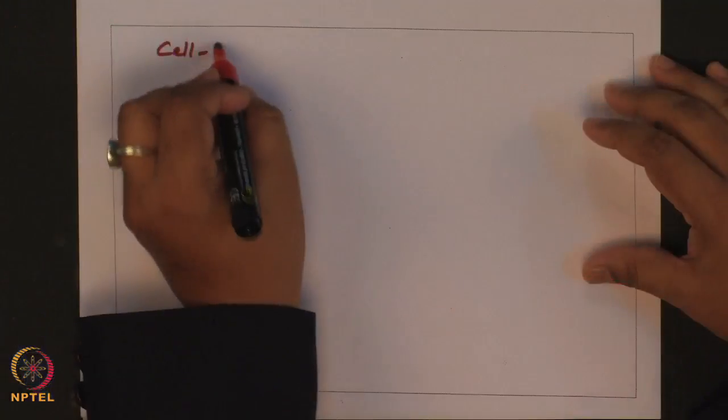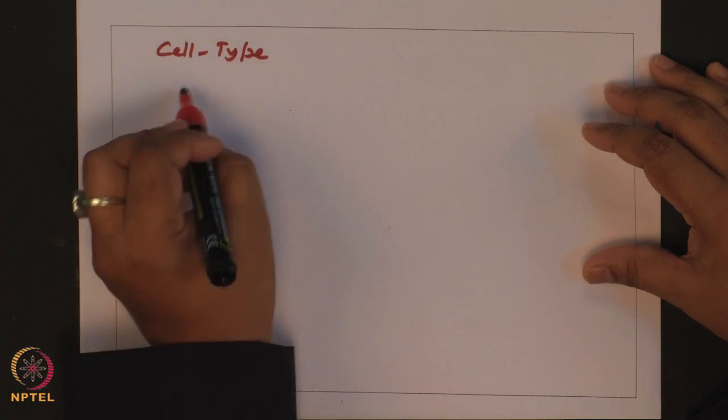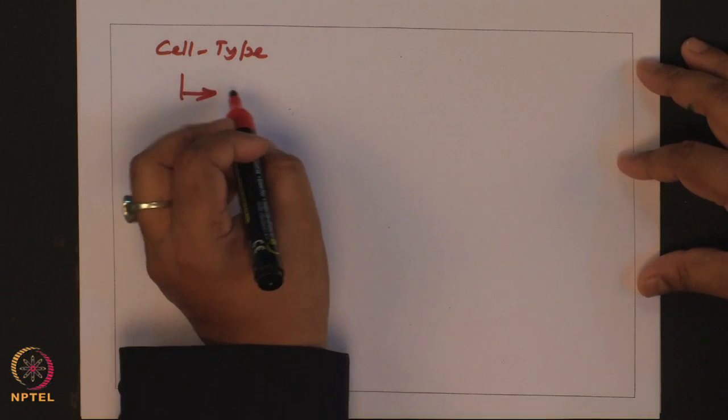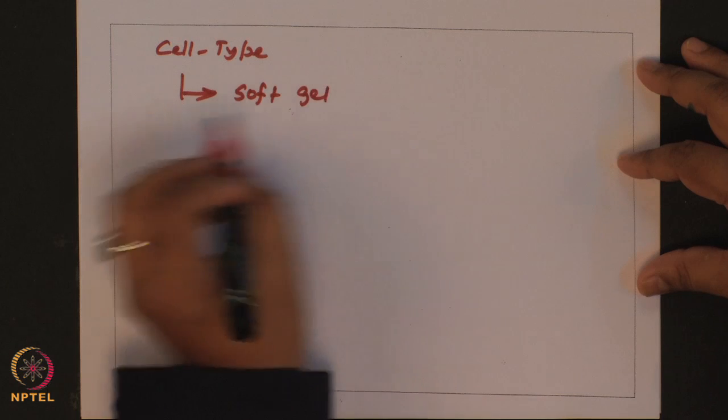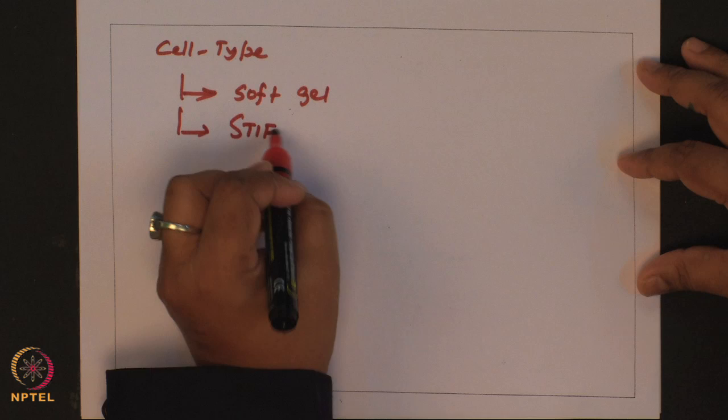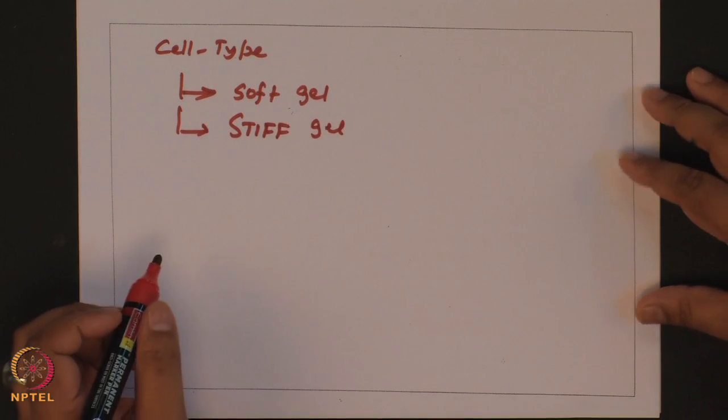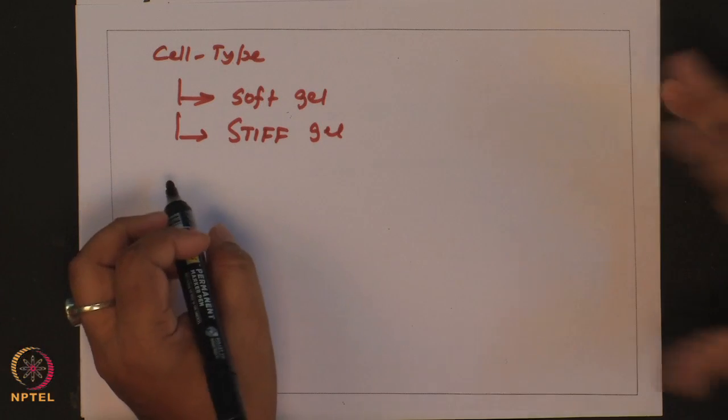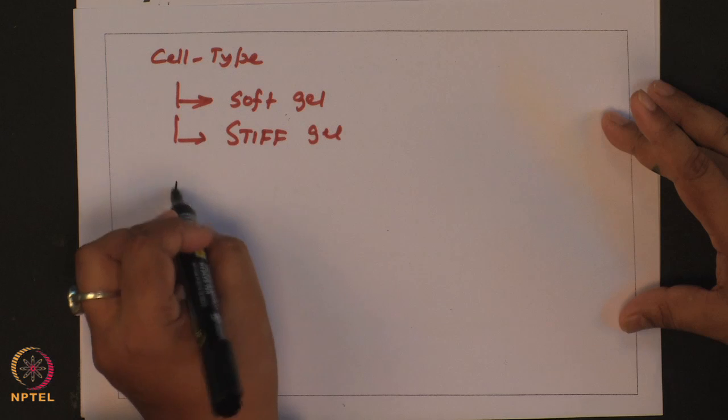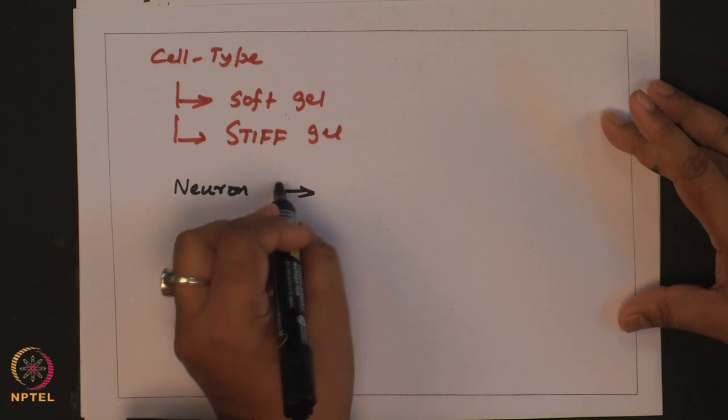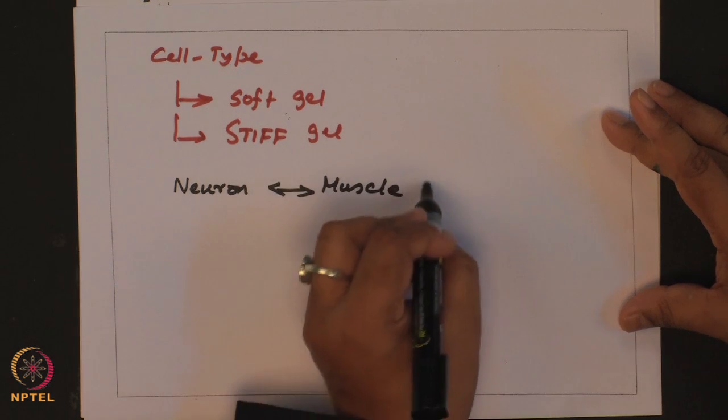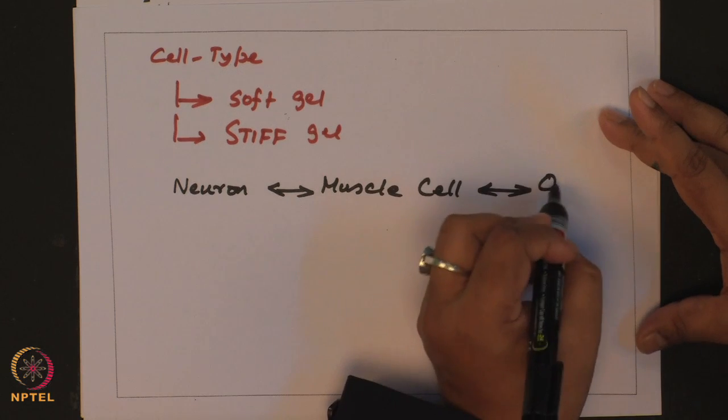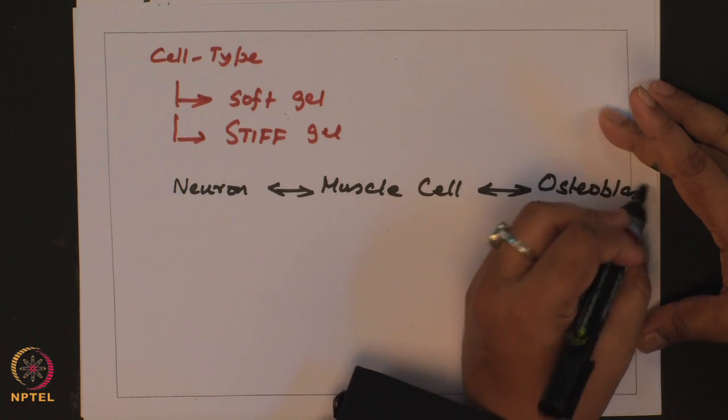Using these systems variety of studies have been performed. Now, one of the question is for a given cell type, on what basis do you call a gel a soft gel versus a stiff gel? What might be your basis for calling a substrate soft or stiff? You would anticipate that what is soft for a neuron is not the same as soft for a muscle cell or not the same for an osteoblast.